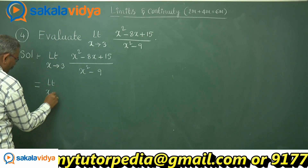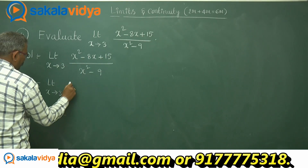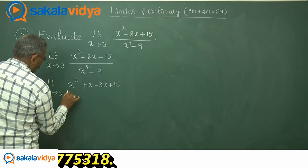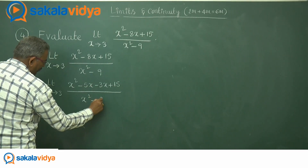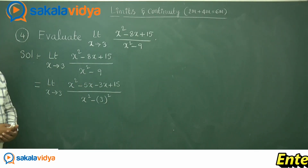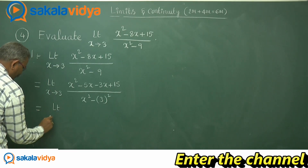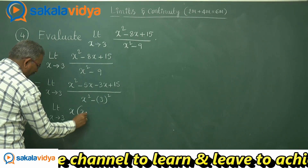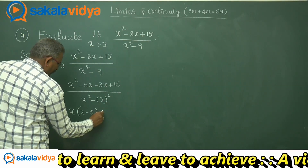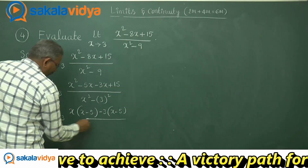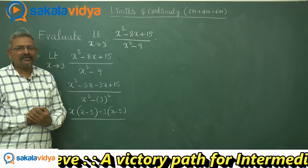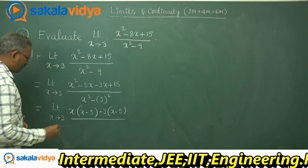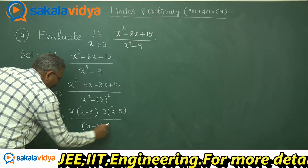Limit x tends to 3. The numerator x² - 8x + 15 can be written as x² - 5x - 3x + 15. The denominator x² - 9 is x² - 3², which is in the form a² - b², so it equals (x + 3)(x - 3). From the numerator, taking x common from the first two terms and -3 common from the last two gives (x - 5)(x - 3).